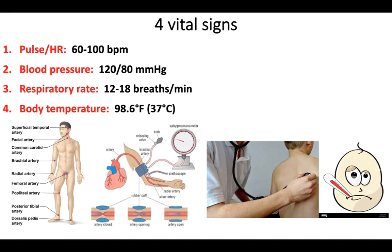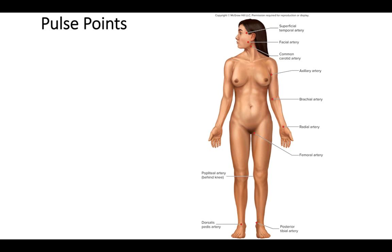Respiratory rate can be measured pretty easily just by watching the chest expand and recoil on every breath. Body temperature is also an important vital sign: 98.6 degrees Fahrenheit, or 37 degrees Celsius, with a range of plus or minus a couple of degrees. Now let's review the pulse points: superficial temporal artery, facial artery, carotid artery, radial artery — which is probably the most common — femoral artery near the groin, behind the knee, and on top of the foot.